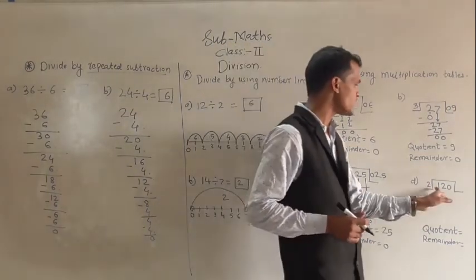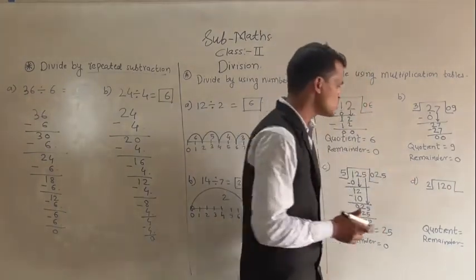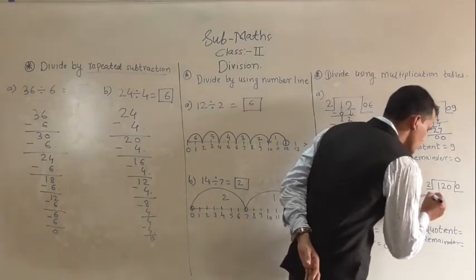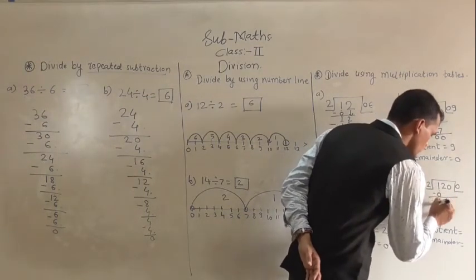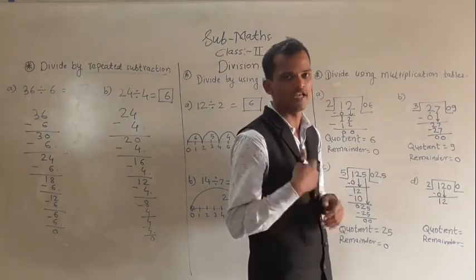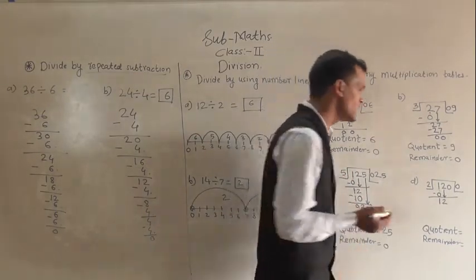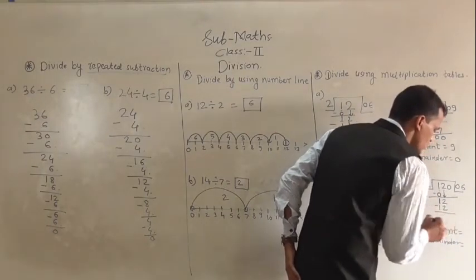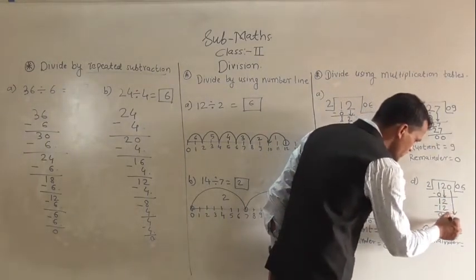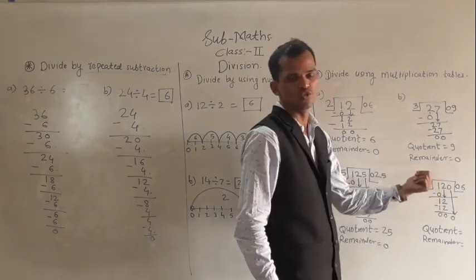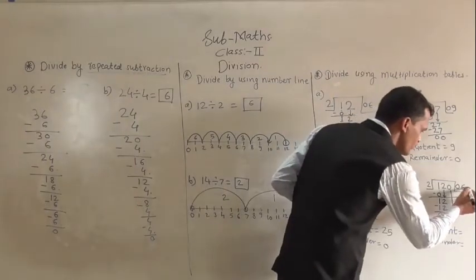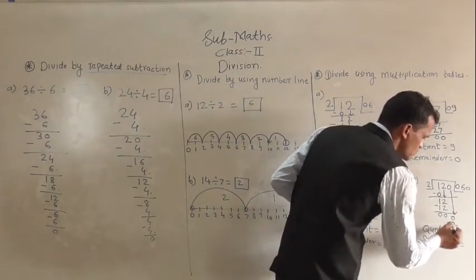Next example: 120 divided by 2. The first digit 1 is not divisible by 2. Write 0 and subtract 0 from 1: 1 minus 0 is 1. Take the 2 down to get 12. In the table of 2, 12 comes: 2 sixes are 12. So write 6 and subtract 12 from 12: 12 minus 12 is 0. Next step — take the remaining 0 down. 0 divided by any number gives quotient 0. Write 0 here and subtract 0 from 0.